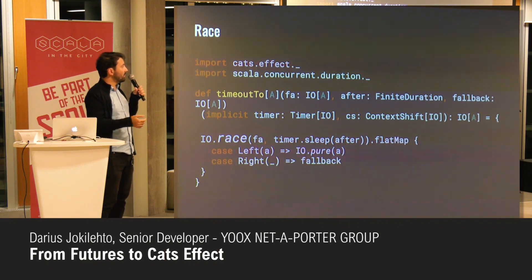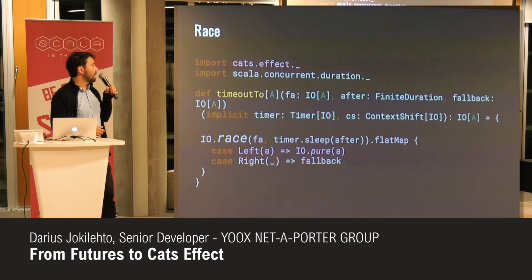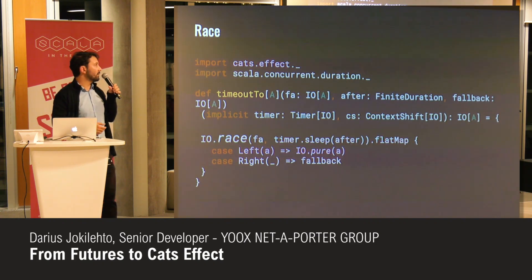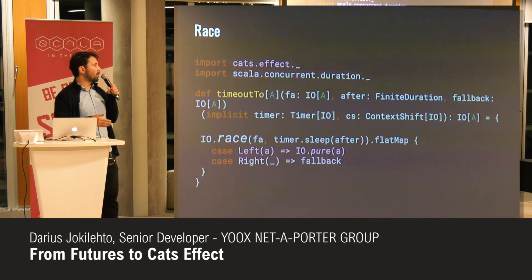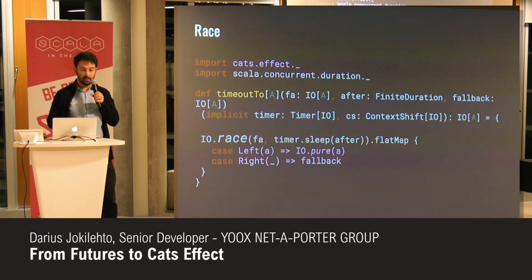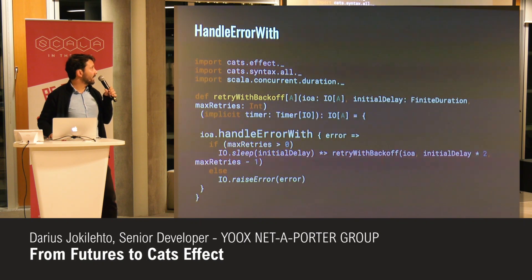New things here: Timer is simply a scheduler in Cats Effect, and ContextShift. If you're not familiar with ContextShift, it is what ExecutionContext is for Futures — ContextShift is for IO. It deals with thread management. Threads are actually called fibers in Cats Effect.